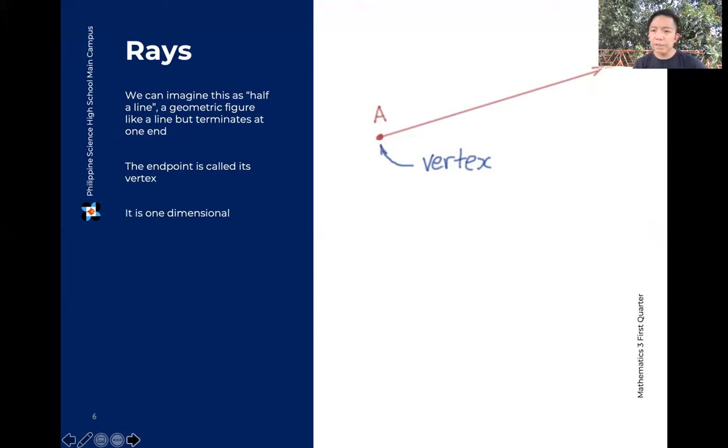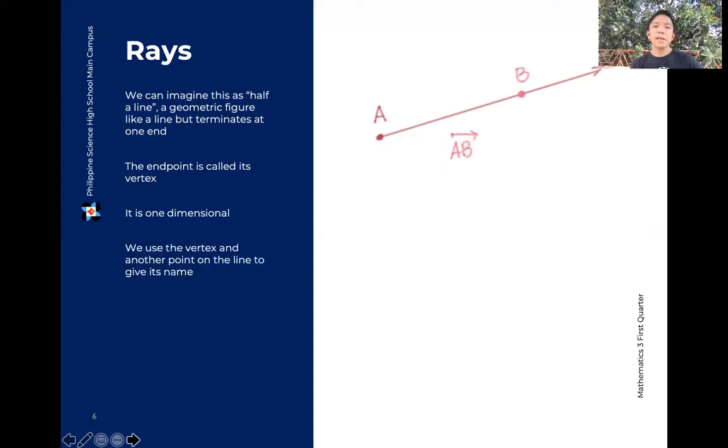It's also one-dimensional. Parang line segment and yung line natin. And we will name another point in the ray. So here, we have point B. Para mabigyan natin ng pangalan yung ating ray. And we use yung vertex and yung second point natin para bigyan siya ng pangalan. Meron tayong ganitong symbol, parang ray din, sa taas ng AB. Ang important lang dito is that yung side, kung nasan yung vertex, yun din dapat yung point, yung letter na nagkocorespond sa point, nung vertex, nung ray natin.